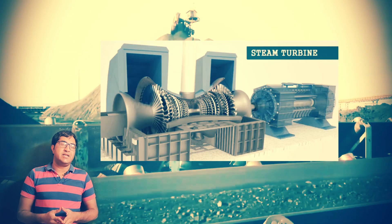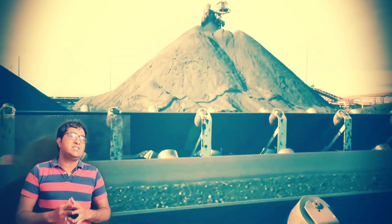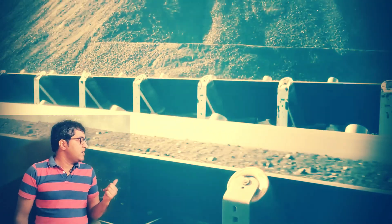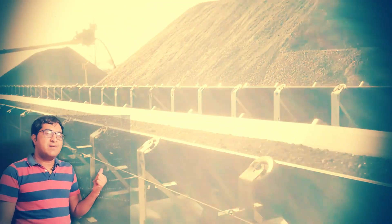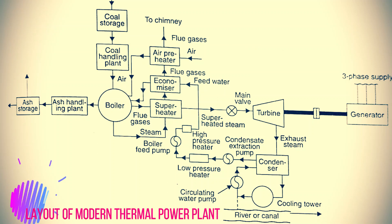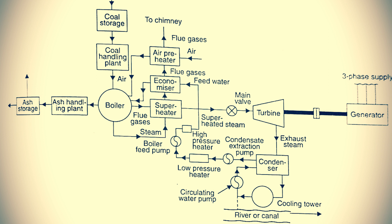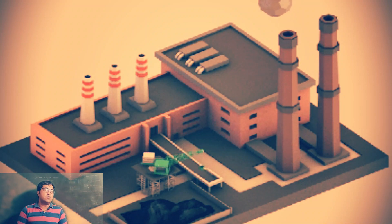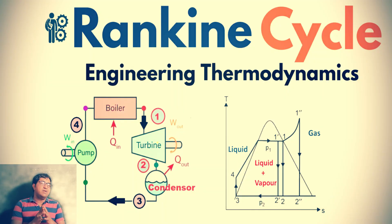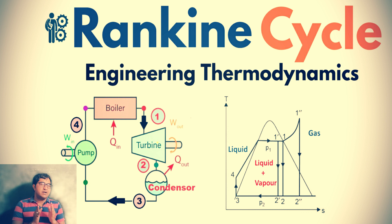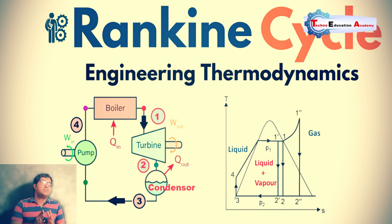Hi, this is Vijay, and I hope you are doing well. In this video lecture I will give you a brief idea about the working principle of a thermal power plant. Here you can see the layout of a modern thermal power plant. It is a coal-based power plant in which we use coal as a fuel, and it works on the Rankine cycle, which we have already discussed. In a Rankine cycle it consists of four basic components: boiler, turbine, condenser, and pump.